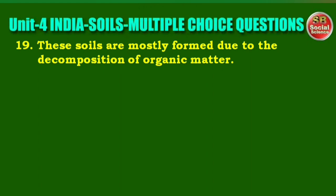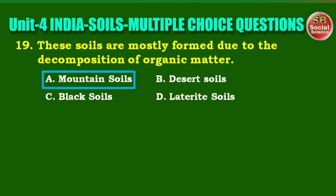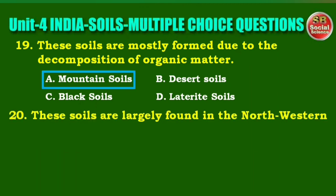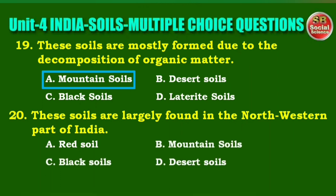Next question: these soils are mostly formed due to the decomposition of organic matter. Options are: mountain soils, desert soils, black soils, laterite soils. The right answer is option A, mountain soils. Next question: these soils are largely found in the northwestern part of India. Options are: red soil, mountain soils, black soils, desert soils. The right answer is option D, desert soils.